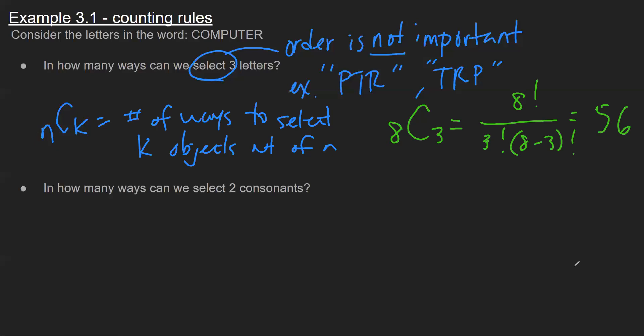The last part of example three one here goes over the same components. But now there's again an additional restriction. The restriction now is I have to select consonants. So when I go through the letters in the word computer, I noticed there are five consonants.